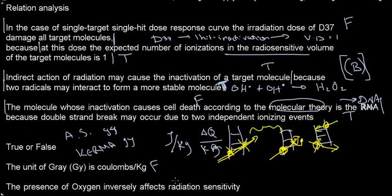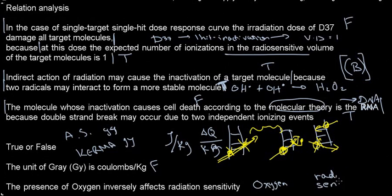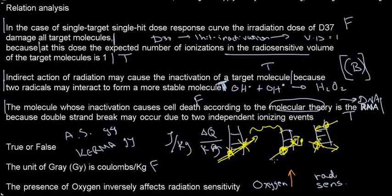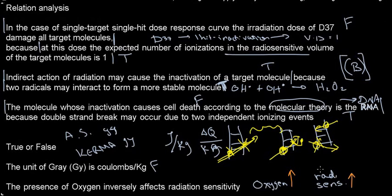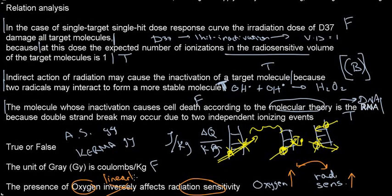The presence of oxygen inversely affects radiation sensitivity. Let's think: if oxygen goes up, there's more formation of oxygen-related radicals, so radiation sensitivity also goes up — that's a linear relationship. So the statement saying it inversely affects is false. It linearly affects radiation sensitivity — when oxygen concentration goes up, radiation sensitivity consequently goes up.